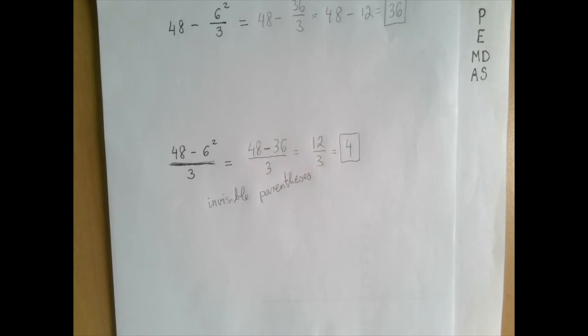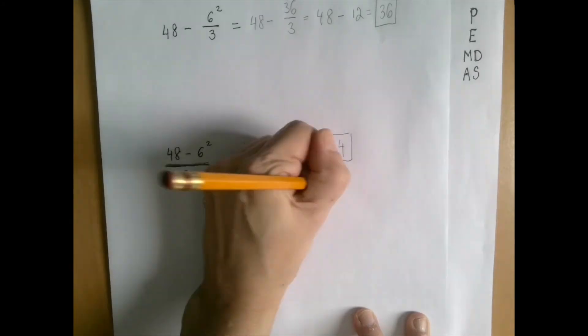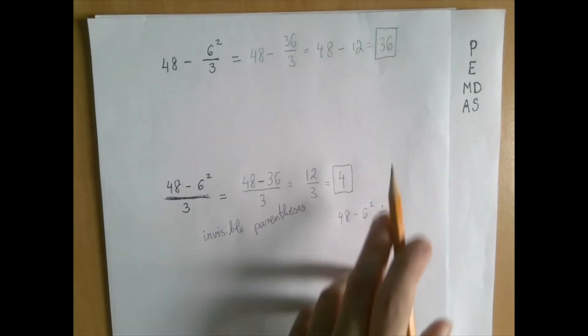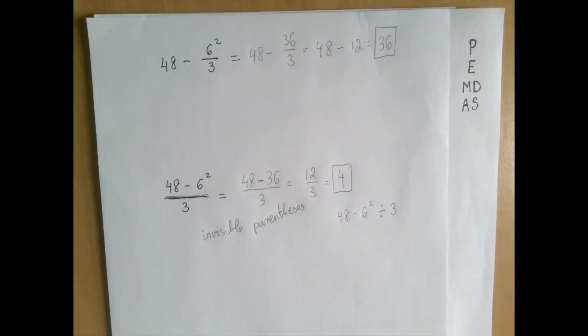Oftentimes these parenthesis have to become visible. For instance, it's a common error to, when trying to enter this, we enter into the calculator this. But this is actually the first problem, right? So the calculator will never perform what you want it to perform. It will perform exactly what we tell it to perform.